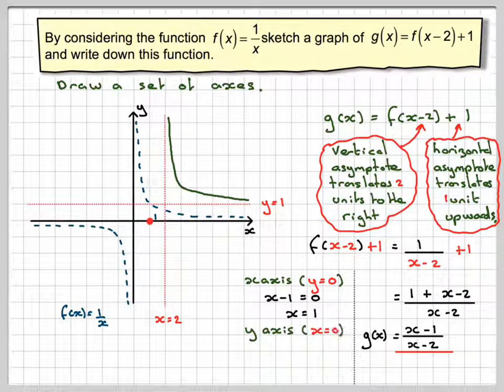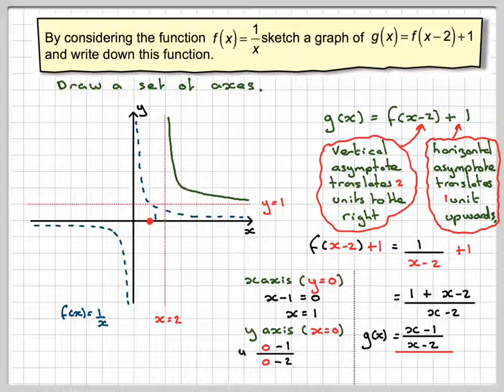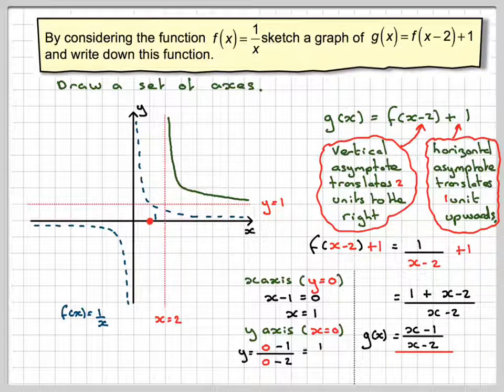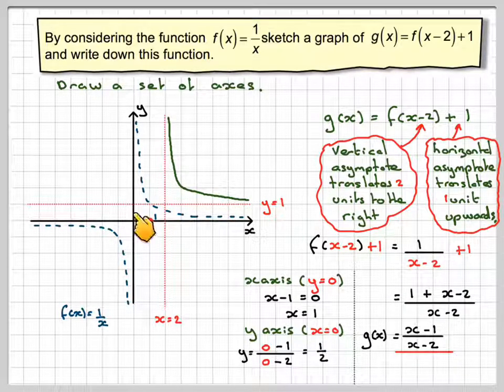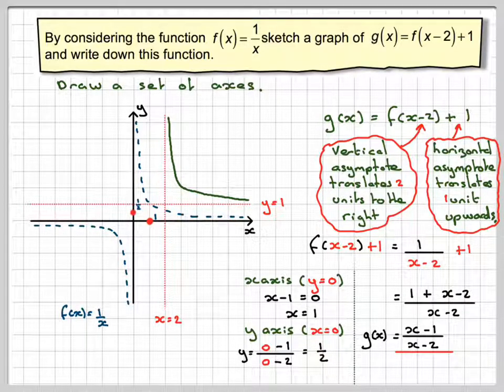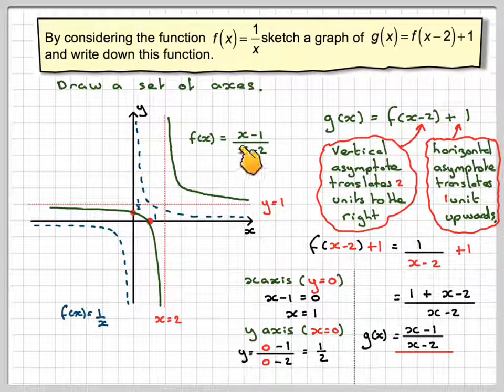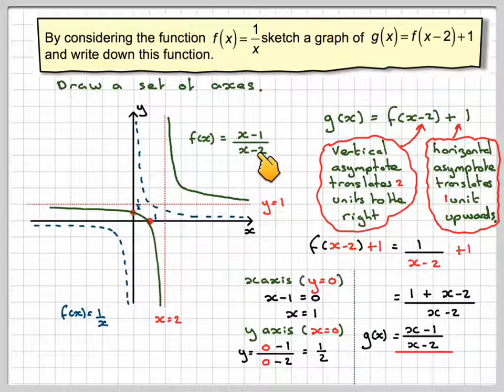And then for the y-axis, I just put x is equal to 0 in the function. So I'm going to have minus 1 over minus 2, which gives me a half. And so I'm going to put that point on my graph as well. So I've now got the bit that I need, so I can now draw it. And now I have the function f of x as x minus 1 over x minus 2.